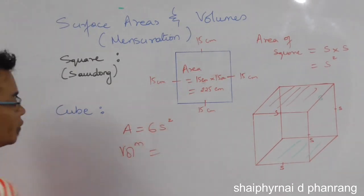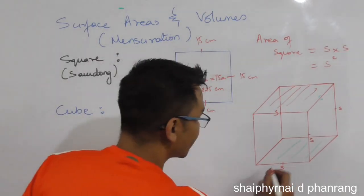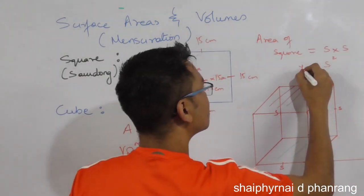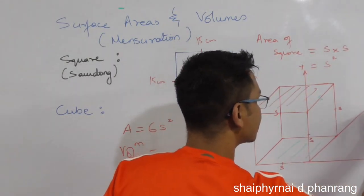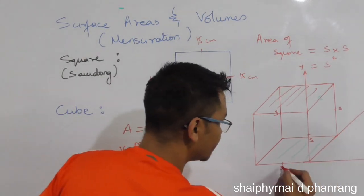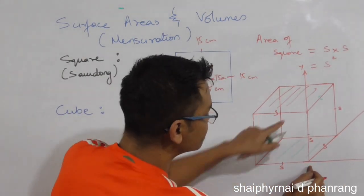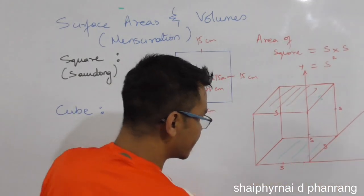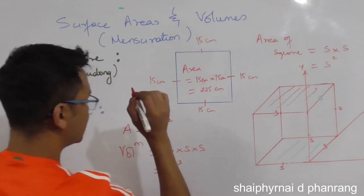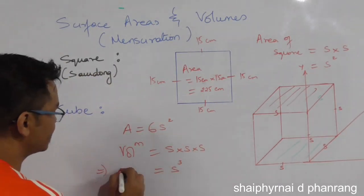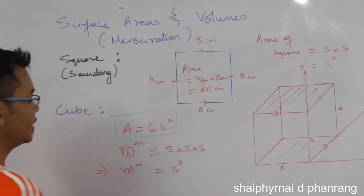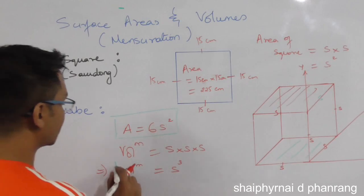Then volume. Volume is written as: it looks like x-direction and the dimension of y distance. So the number of 2S and 2S — it will also be 3S and 4S — S into S into S. So volume is equal to S cube. It implies volume equals S cube. This is 6S squared, but volume equals S cube.